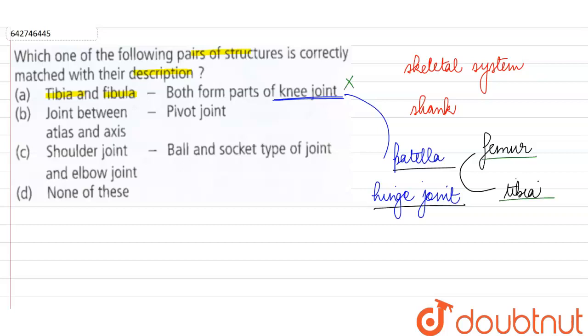Which are articulating with each other with the help of the kneecap or the patella, but the fibula bone is not associated over here. Next they are saying joint between atlas and axis, pivot joint.